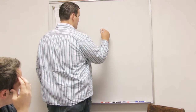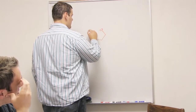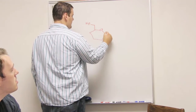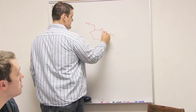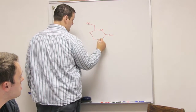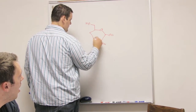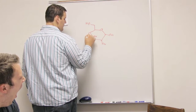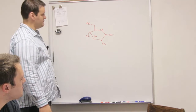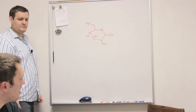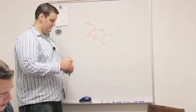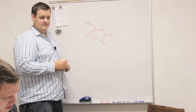On our hexose, the anomeric carbon is this one because it has two oxygens bound to it, whereas everywhere else they just have one oxygen bound. The anomeric carbon has two oxygens — that's one of the easiest ways to identify it.